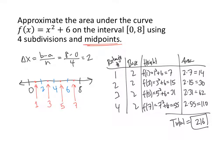The key things to pay attention to are: the interval, which gives you a and b; the number of subdivisions, which gives you n; and how you choose the points for the heights — left-hand endpoints, right-hand endpoints, or midpoints. Based on those instructions, compute delta x, draw a number line, and create a table to organize your work.